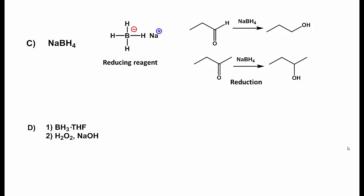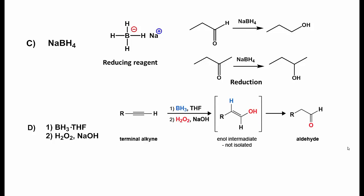Reagent D is borane and THF, followed by the addition of hydrogen peroxide in a basic solution. The hydroboration oxidation reaction produces aldehydes with terminal alkynes, and the reagent adds an alcohol to the least substituted carbon of an alkene.